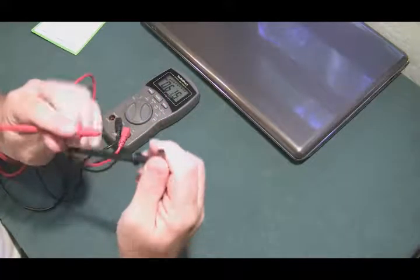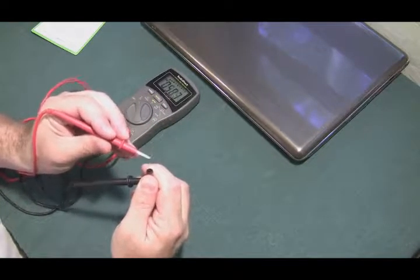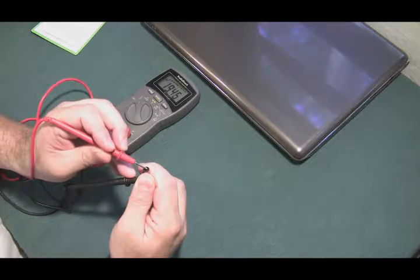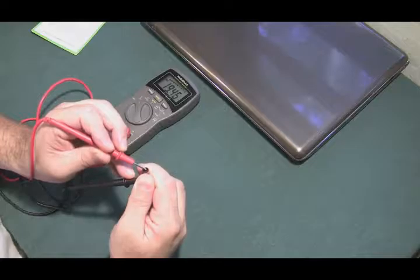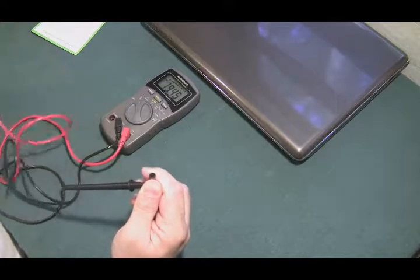Put the black on the outside, red on the inner ring, and let's look at the voltmeter as I do this. Okay, see the voltmeter, 19.46. That's what we want. It's 19 volts, around 19 and a half volts. Take it off.